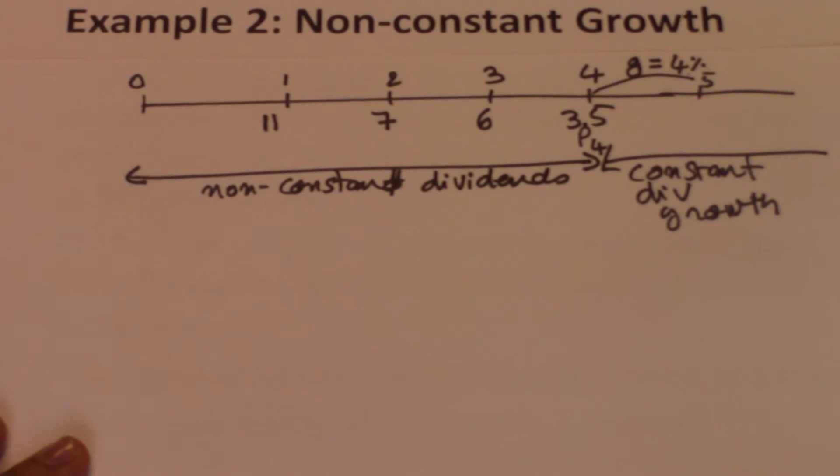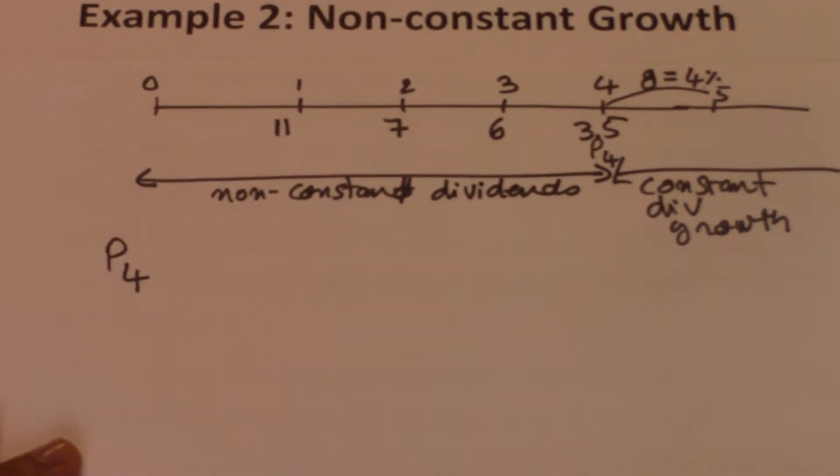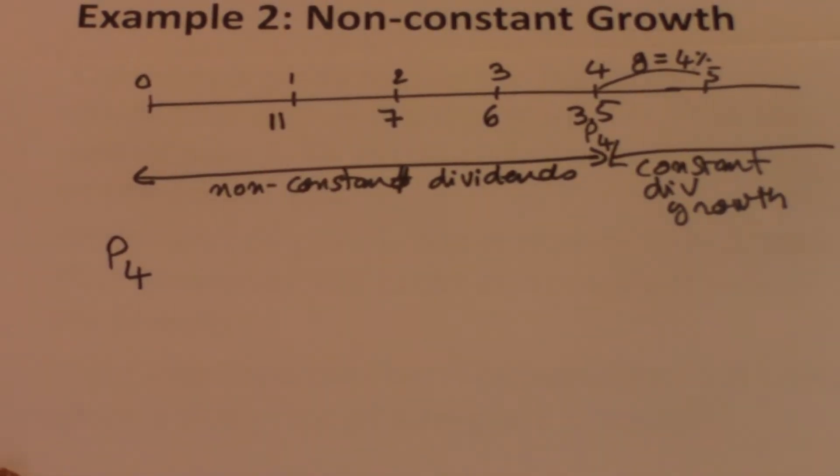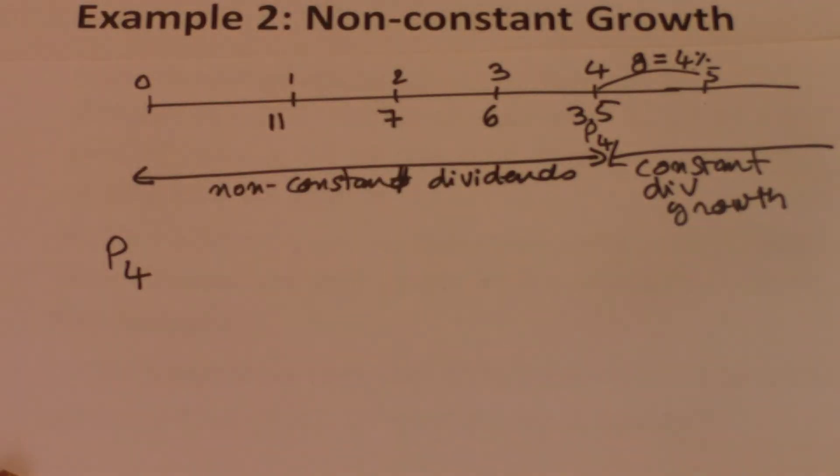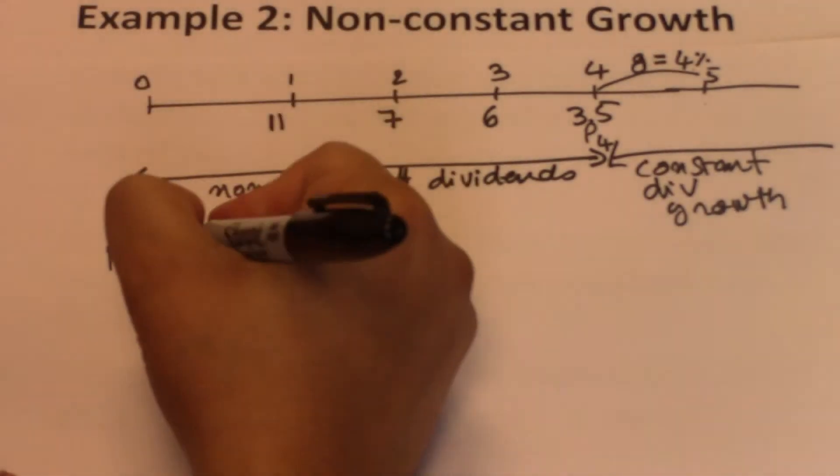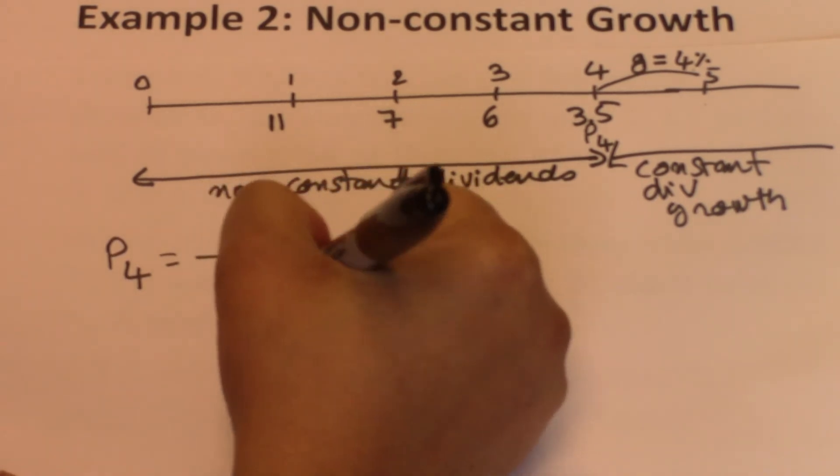The dividends are growing constantly over time at the end of year 4. To determine P4, we use the constant dividend growth model that says the price equals the next dividend divided by R minus G. The next dividend after year 4 is the dividend we expect to get at the end of year 5. So, P4 equals D5 divided by R minus G.